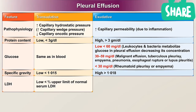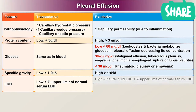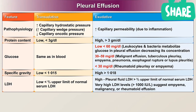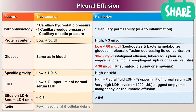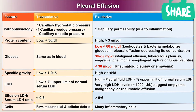LDH is low for transudates, less than two-thirds of the upper limit of normal serum LDH. It is high in exudates, with pleural fluid LDH more than two-thirds the upper limit of normal serum LDH. Very high LDH levels, for example more than 1000 international units per liter, suggest empyema, malignancy, or rheumatoid effusion. Effusion LDH to serum LDH ratio is less than 0.6 in transudates and more than 0.6 in exudates. The cells in transudates are few, mesothelial, and cellular debris. There are many inflammatory cells in exudates.